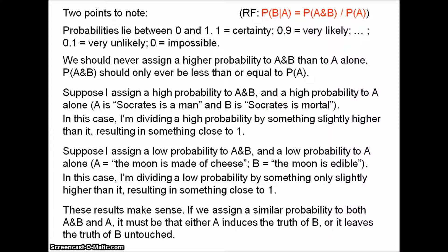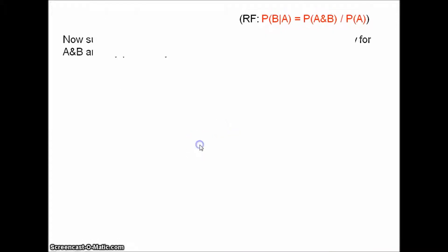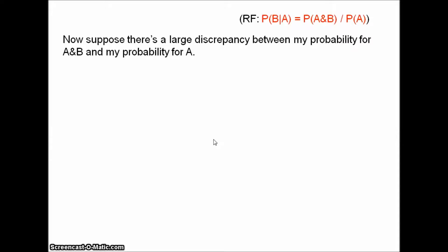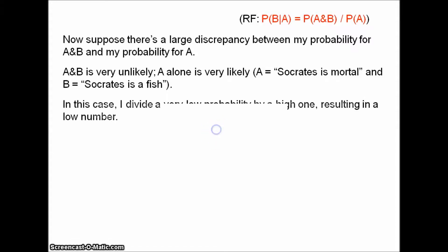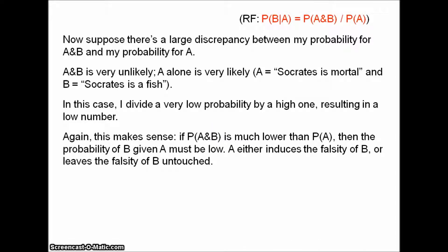These results make sense. If we assign a similar probability to both A-and-B and to A alone, then it must be that A either induces the truth of B or leaves the truth of B untouched, so we'd want to say the probability of B given A is high — and that's what the ratio formula gives us. Now suppose there's a large discrepancy between my probability for A-and-B and my probability for A. I think A-and-B is very unlikely while A alone is very likely — say A is 'Socrates is mortal' and B is 'Socrates is a fish.' In that case I'm dividing a very low number by a very high one, resulting in another low number. This makes sense: if the probability of A-and-B is much lower than the probability of A, then the probability of B given A must be low — A either induces the falsity of B or leaves the falsity of B untouched. So we can see that the ratio formula is quite plausible.